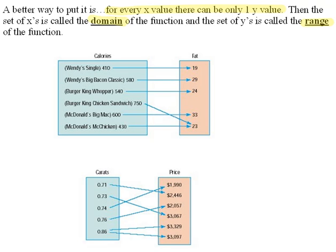Okay, we talked about the definition of a function. We said that for every x value, there can only be one y value, and that's it. Now let's look at some visual representations of that to hopefully give you a better idea of what we're talking about.